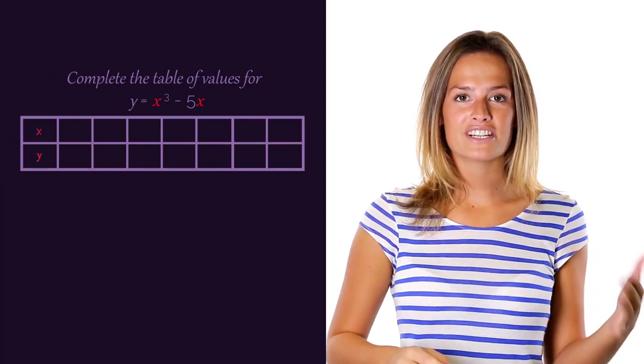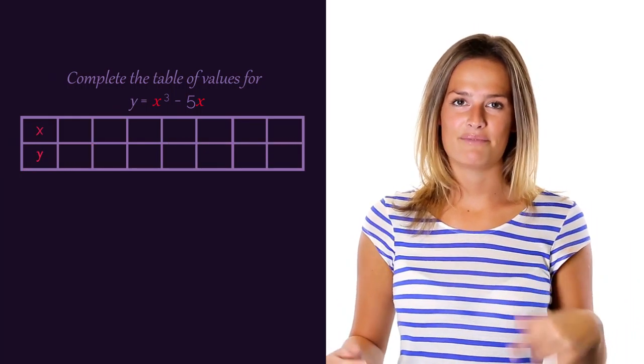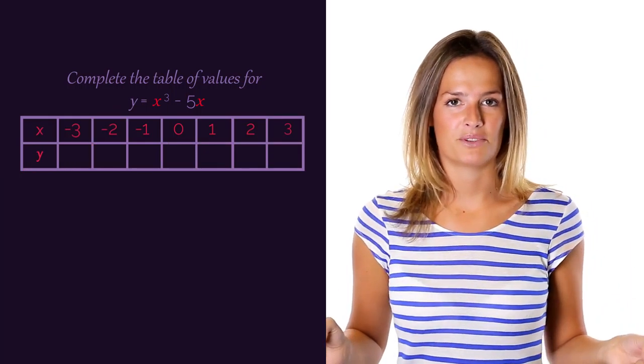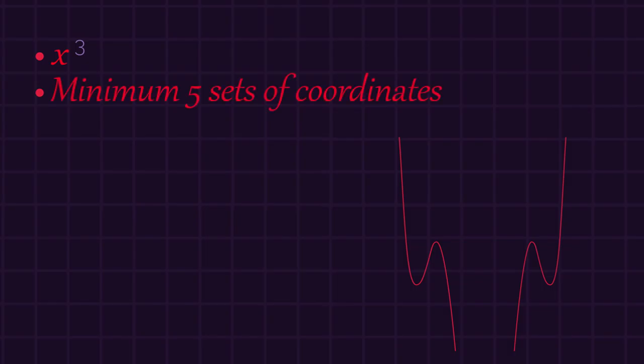Luckily for you, you're usually given the x values in the table of values, so you know what to substitute in. So you should now know how to plot cubic graphs using a table of values. It's the x cubed that tells us it's going to be one of these shapes. And we need a minimum of 5 sets of coordinates to make sure we get the right curve.